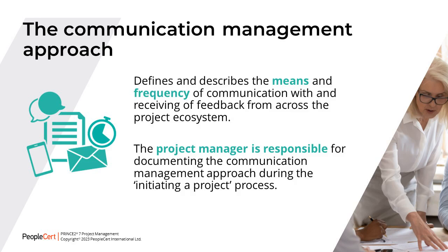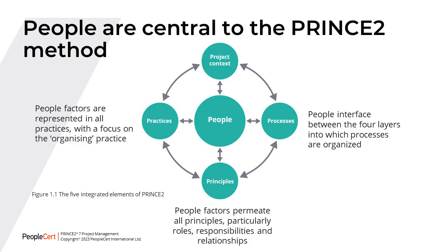PRINCE2 is based on seven principles, one of which is that all PRINCE2 projects must define roles, responsibilities and relationships. This ensures people factors are continually addressed throughout the project's life cycle. PRINCE2 defines seven practices that are essential aspects of project management that must be applied continually and in parallel throughout the life of the project. The organising practice explains how people organise within a temporary project management team.